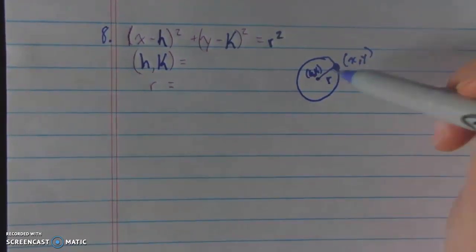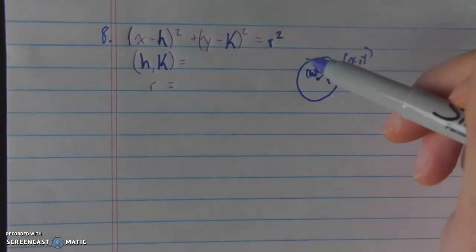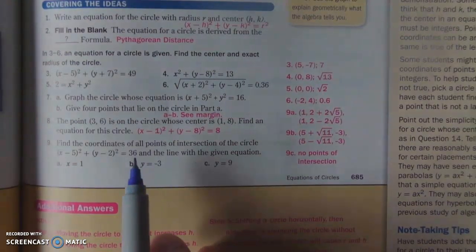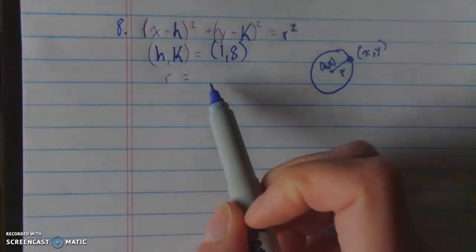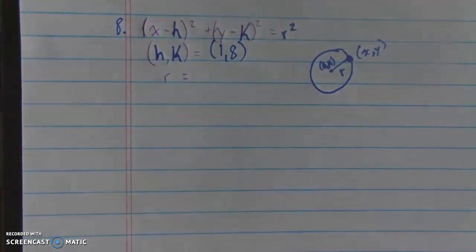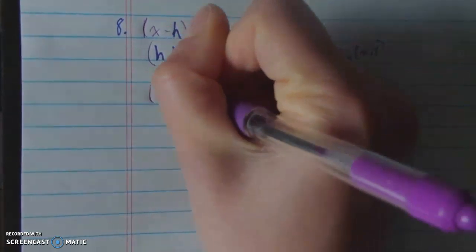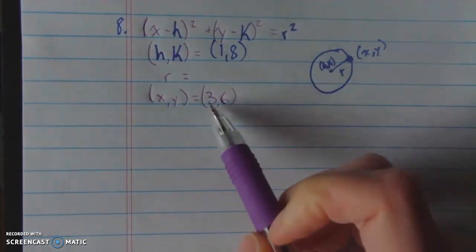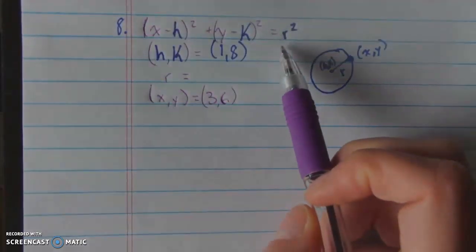Now there's a couple things you can think of here. If radius is just the distance between h, k and x, y, you can actually go ahead and use the distance formula to find the radius. But we actually don't need to do that. You can just use the equation of a circle. Because if I'm looking at this, I know that h, k, according to my question, is the point 1, 8.